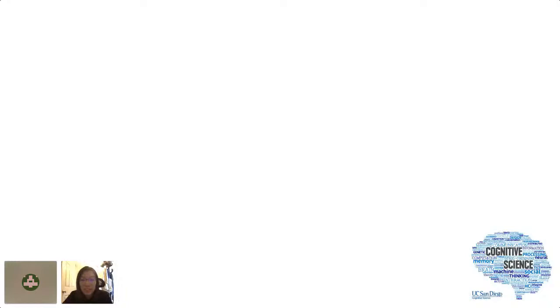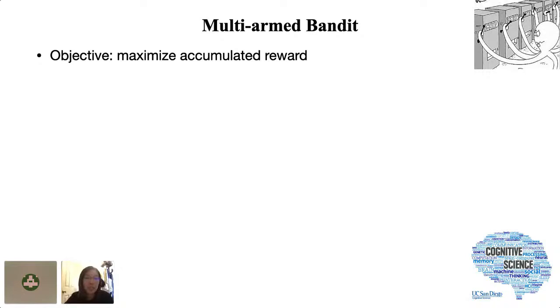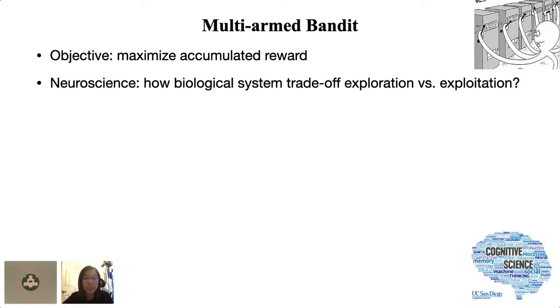Hi everyone. I'm a PhD student in cognitive science at UC San Diego. The next five minutes of my talk will be about multi-armed bandit tasks. In multi-armed bandit tasks, you're given a few options to choose from without knowing the reward rate of each option, and your goal is to maximize the cumulative reward. It's a paradigm widely used in neuroscience for humans and animal studies to investigate how biological systems trade exploration and exploitation — what strategy they use and how the brain computes information to learn from the environment and make decisions.